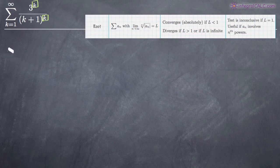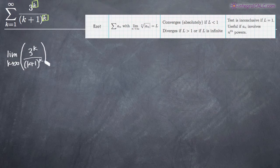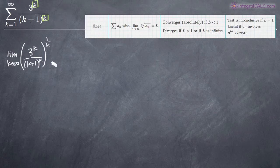Because what we do when we use the root test — let me just set this up — we take the limit as k goes to infinity of the series, and we write out the series: 3 to the k divided by the quantity k plus 1 raised to the k. We take the entire series and we raise it to the power of 1 divided by k. Basically what we're doing is taking the kth root of the entire series.